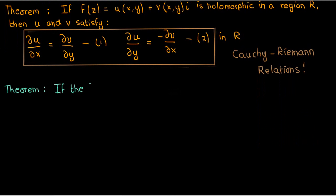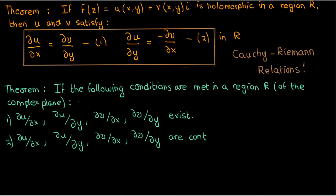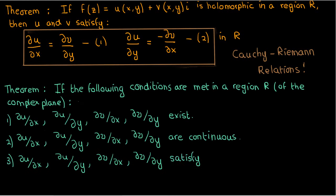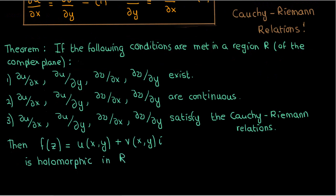The second theorem talks about sufficient conditions. It states that if the following conditions are met in a region R of the complex plane: first, the partial derivatives of u and v with respect to x and y exist; second, they're continuous; and third, they satisfy the Cauchy-Riemann relations — then the function f(z), composed of real part u and imaginary part v, is holomorphic in the region R. I won't be proving these two theorems, but in the context of a mathematical physics lecture series, stating them should suffice.